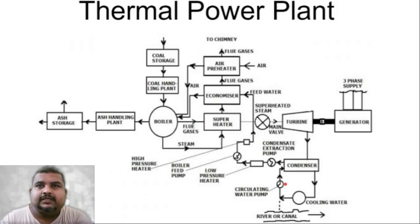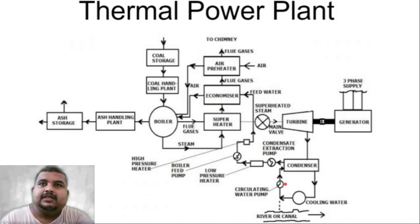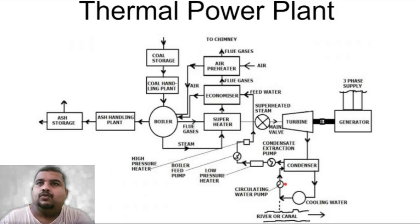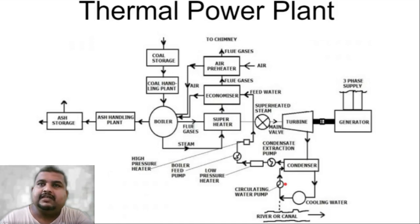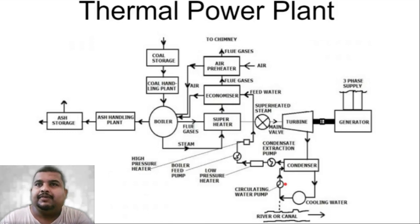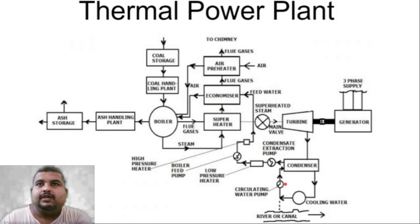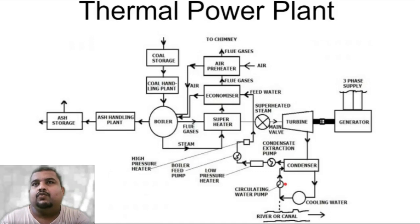After the flue gas gives heat to the superheater, that heat is again extracted at the economizer — the economizer heats the feed water using the flue gases. The flue gases then go to the air pre-heater, which heats the incoming air. After that, the flue gas goes to the chimney.